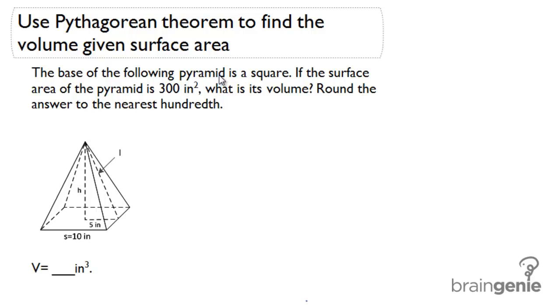By looking at this pyramid, the first thing I notice is that we don't know the height, and we also don't know the slant height. For volume, we need the regular height because we want to use this formula: V equals one-third base area times height.